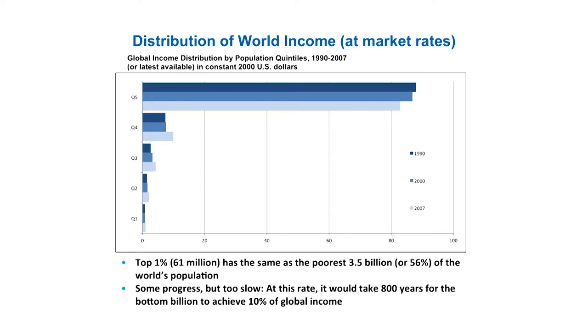There are many ways to calculate that. In constant U.S. dollars at market rates instead of adjusted by PPP, we get much more significant differences in income. In that case, the top richest 20% actually has more than 80% of world income, and the poorest has hardly 1%. It's also interesting to note that the top 1%, or 61 million people, will have the same as the poorest 3.5 billion — approximately half of the world population. The figures are very striking.